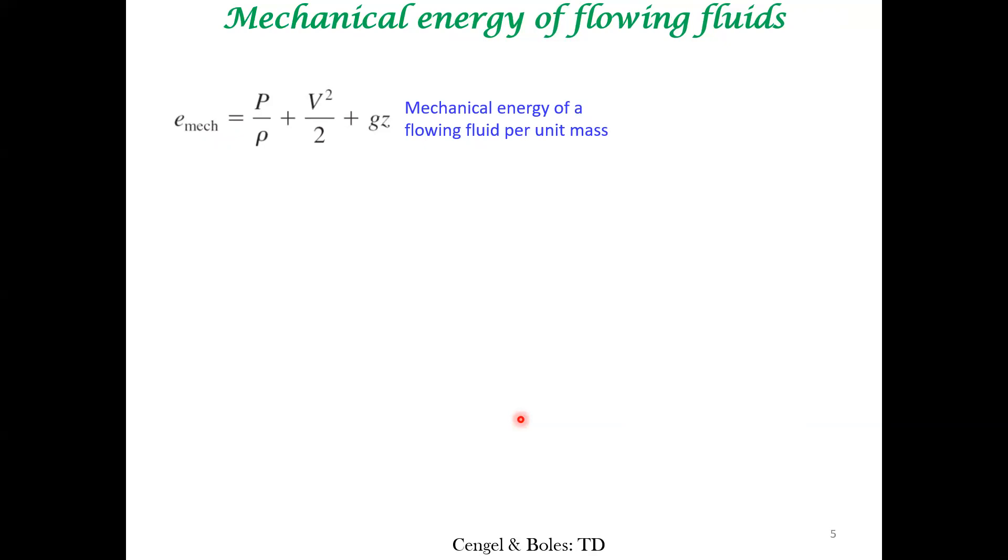The mechanical energy of a flowing fluid per unit mass has three components: kinetic energy, potential energy, and this term P divided by ρ. Rho is mass per unit volume, so if you rearrange it becomes PV per mass. This term is the work involved in assembling the fluid to a particular pressure and volume, per unit mass.